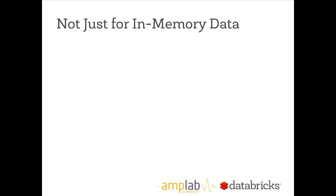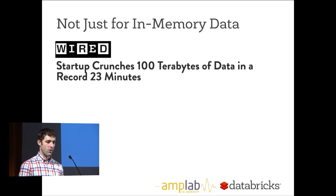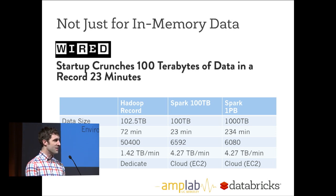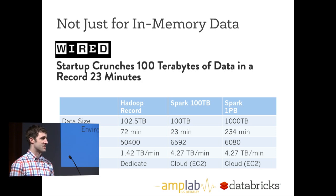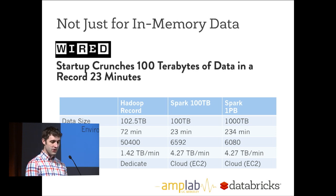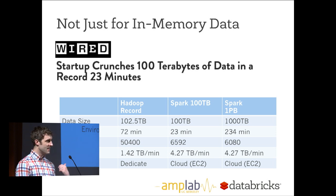One fallacy I'd like to dispel is the notion that Spark is really about in-memory data. Yes, Spark is great at caching for iterative computations, but it's quite a bit more than that. Recently there was a new record for sorting 100 terabytes of data in a record 23 minutes. Spark was able to compete with a system built over a year specifically just to sort integers. Using Spark — a much more general computation engine — it was able to beat the previous benchmark set at Yahoo using Hadoop, with about 10x fewer machines and still 2 to 3 times faster.